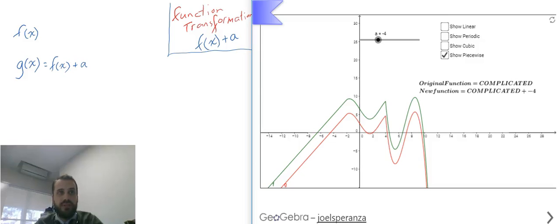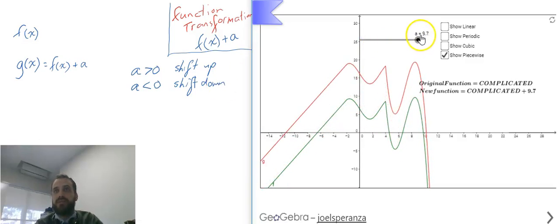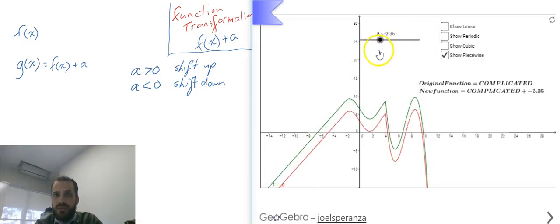Generally, let's write this. If we add a letter to our function, if a is greater than 0, it will shift up. If a is less than 0, it will shift down. So a > 0 shifts up, a < 0 shifts down.